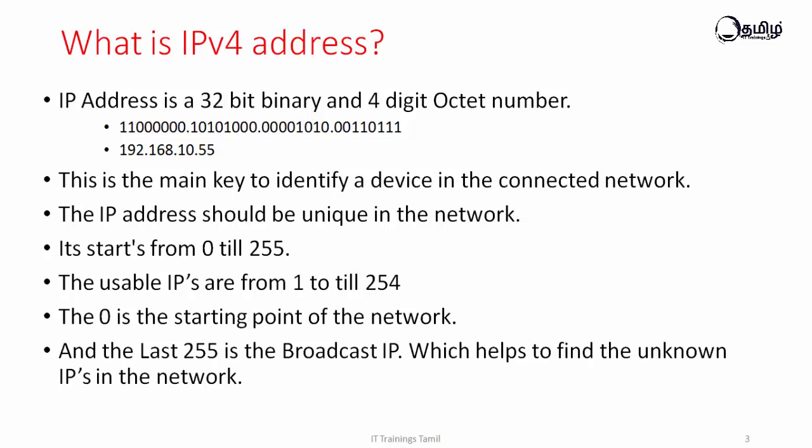An IP address range is 0 to 255. However, 0 and 255 are reserved. The 0 address is the network address. So the usable IP range is 1 to 254. If we use IPs, we can use 1 through 254 as usable addresses.